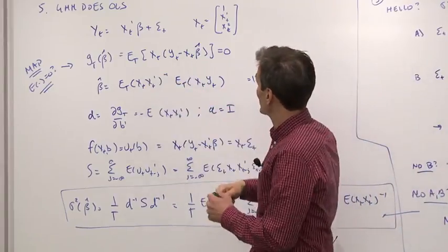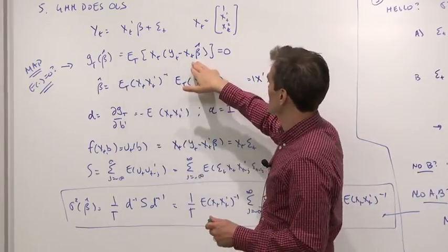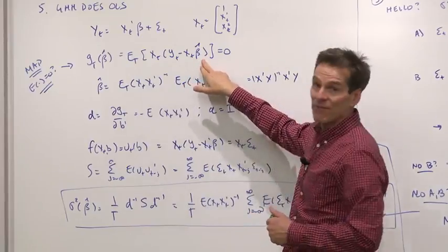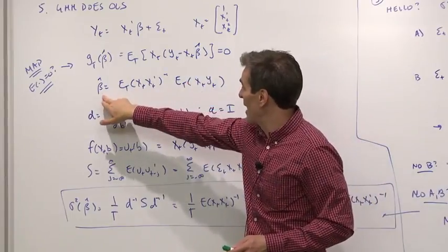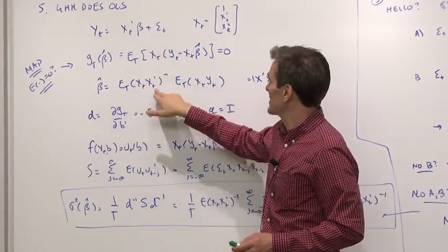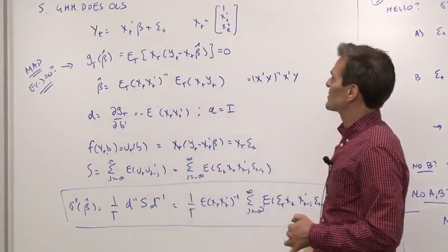So this is our A, just identity matrix, times gt equals zero. Solve that for beta. This one, we don't have to do any computer searches. Solve that equation for beta hat. Beta hat is E of x, x prime inverse, E of x, y.